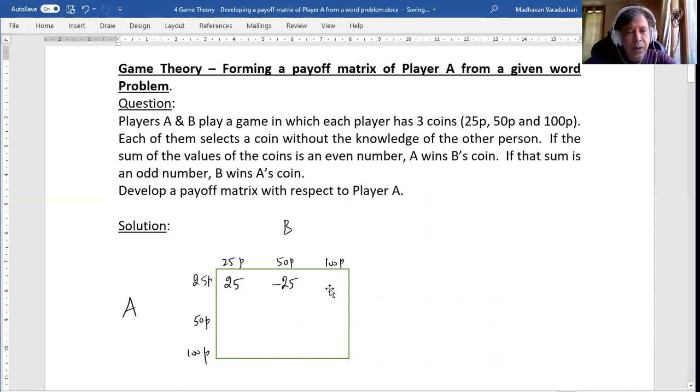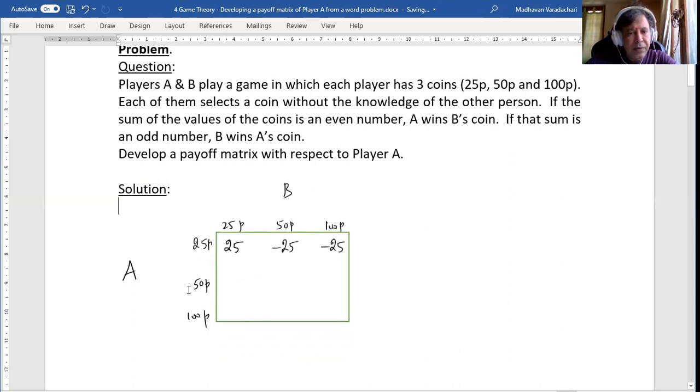Now the next one, 100 and 25. If I add these two, it is 125. 125 is an odd number. Again, Player B will receive A's coin. So this becomes minus 25. Again, coming here, 50 and 25, if I add, it is 75. 75 is an odd number, which means B will receive A's coin. A is going to lose 50 paise.